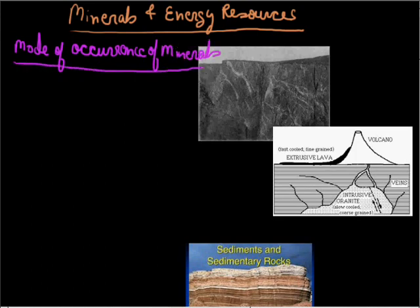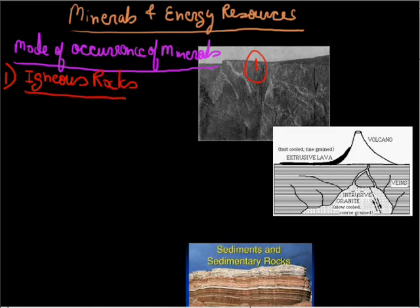If you see the mode of occurrence of minerals, the minerals are basically found first in igneous rocks. As we know that igneous rocks are the molten magma which comes outside and when it becomes solid, that rock is known as igneous rock. Obviously it also keeps a lot of minerals in it.